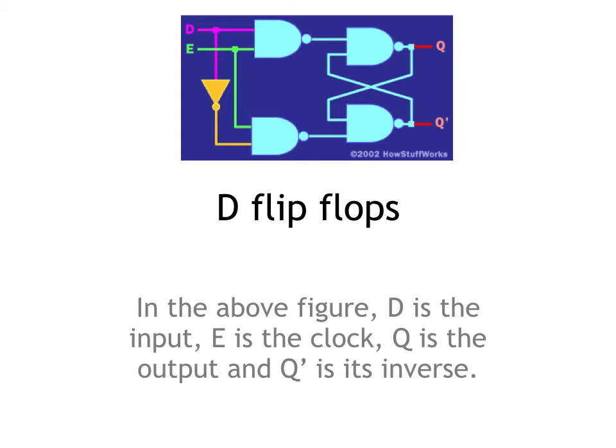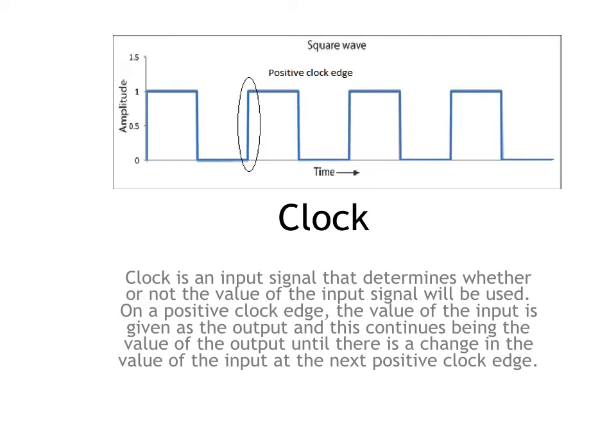A clock is a wave that repeatedly alternates between 0 and 1. When we say that a particular computer is clocked at, let's say, 2 GHz, we're actually talking about the frequency of this clock. The clock determines whether or not the value of the input signal will be used.